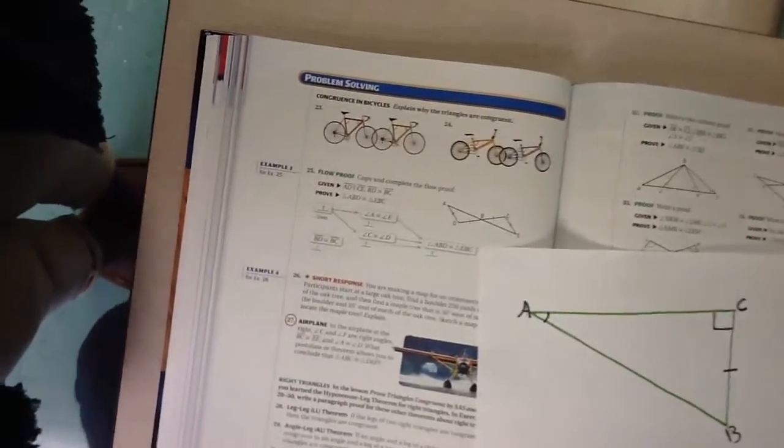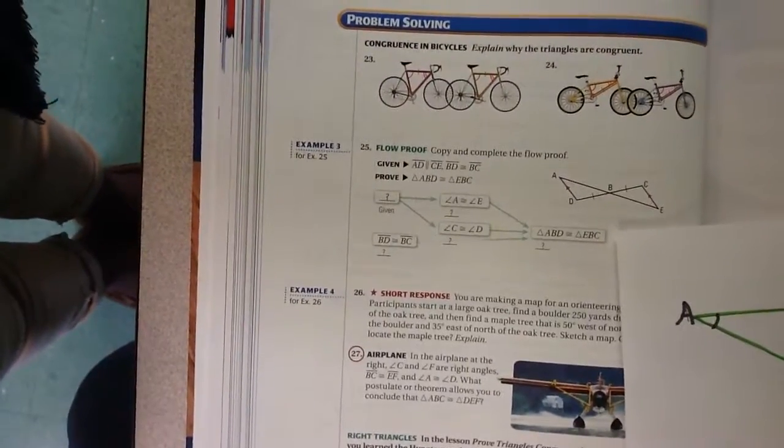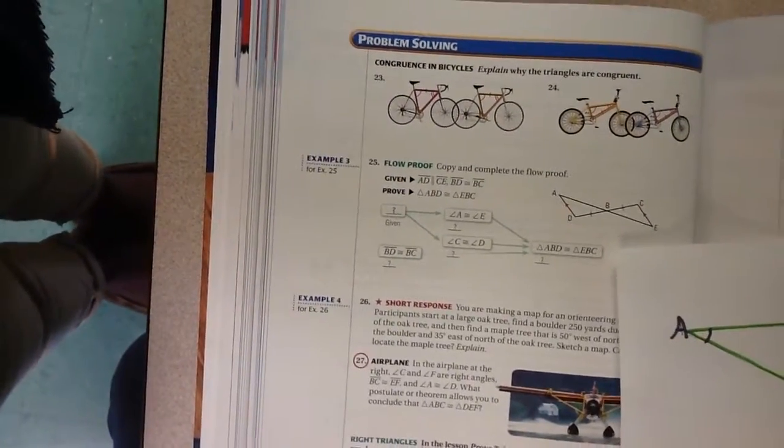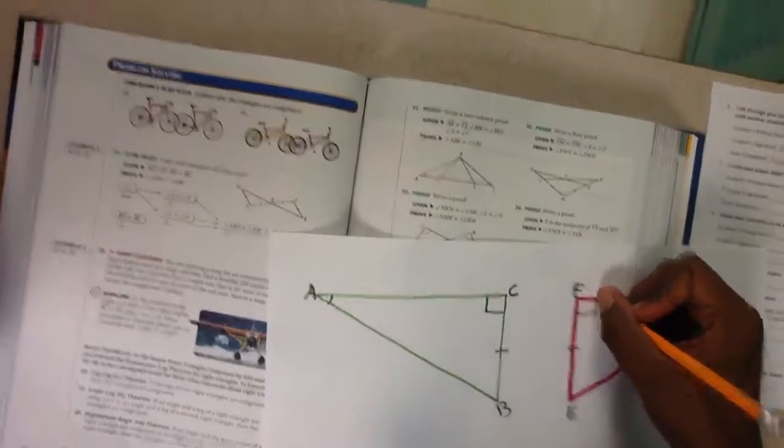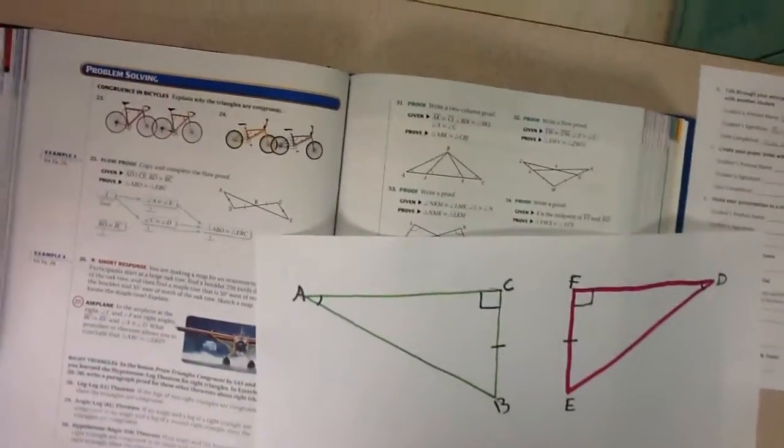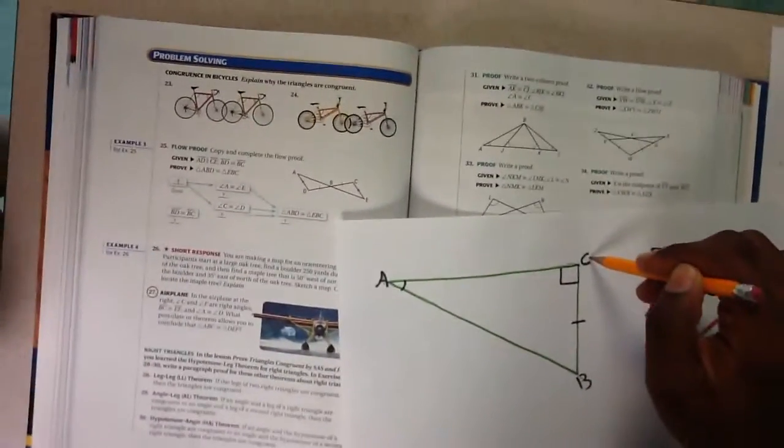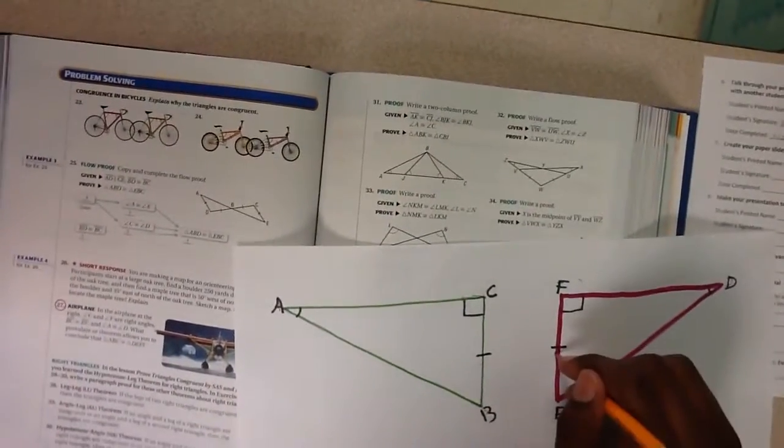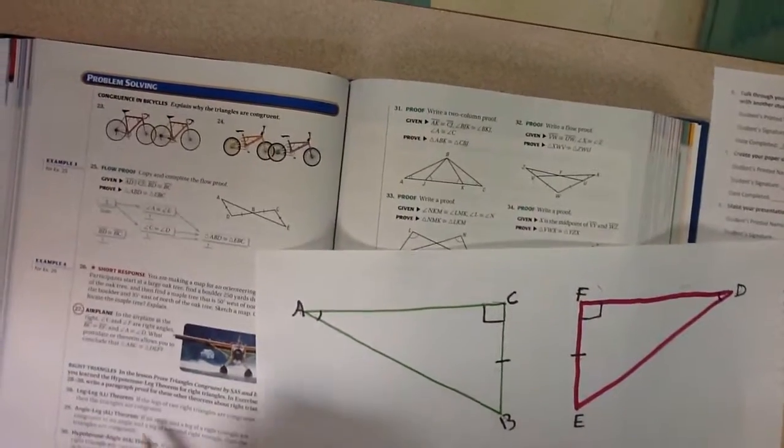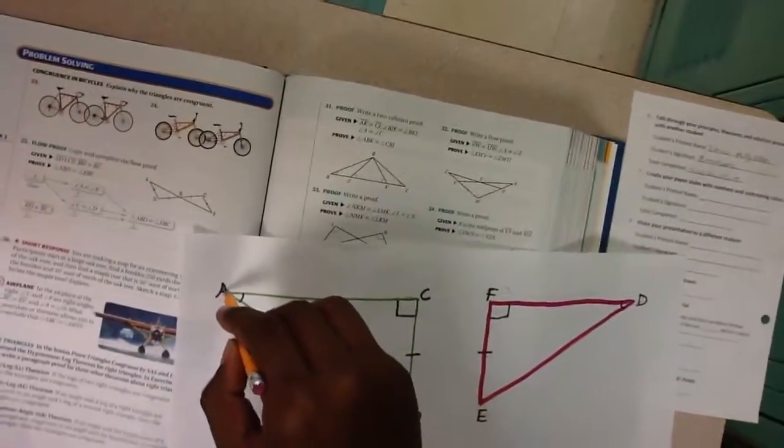The answer can be found in the problem itself. Angle C is a right angle, and F is also a right angle. And then it says segment BC is congruent to segment EF. We already have one congruent side. And then it says angle A is congruent to angle D.